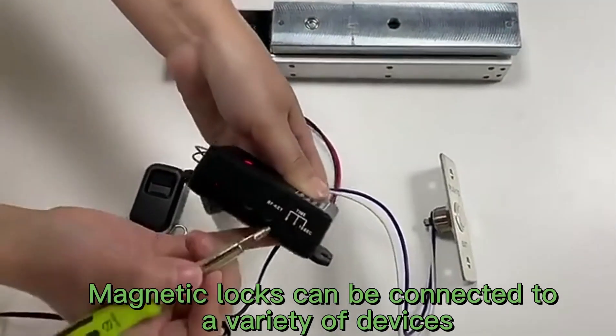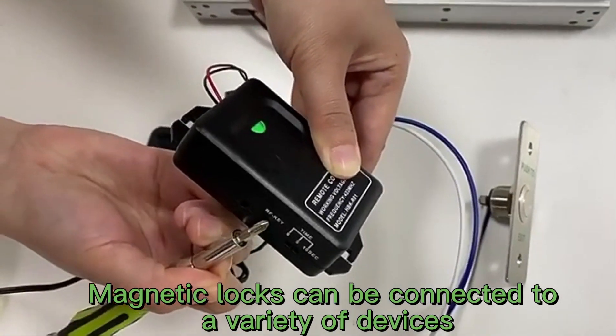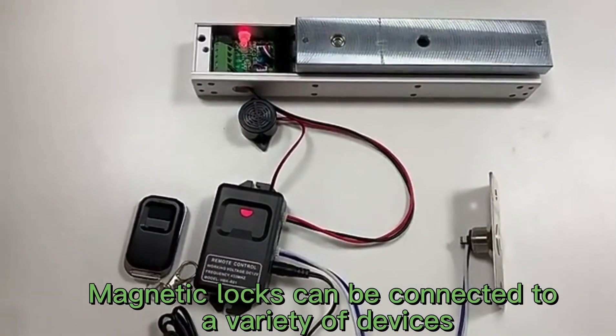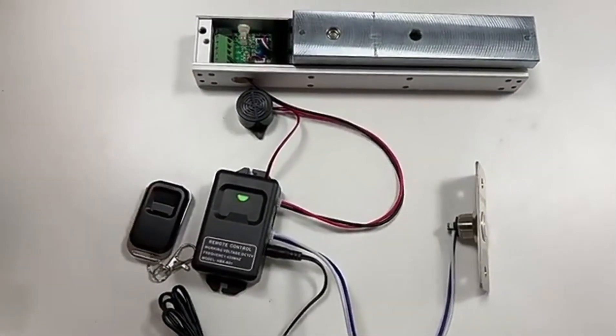Press the RF button on the receiver once, and the indicator on it will flash green once. Then, press the button on the transmitter within 20 seconds. The LED indicator on the receiver will flash green 3 times to indicate pairing is successful. After you press the button on the transmitter, the electric lock will unlock the door.